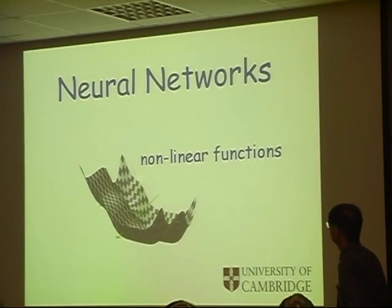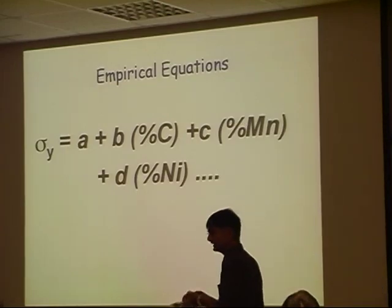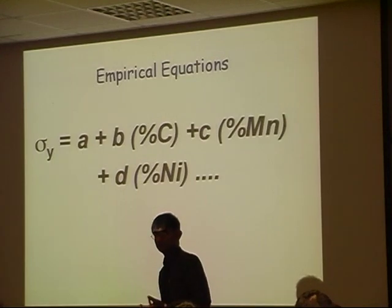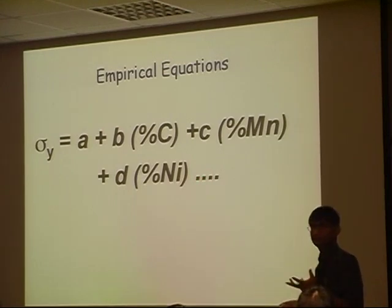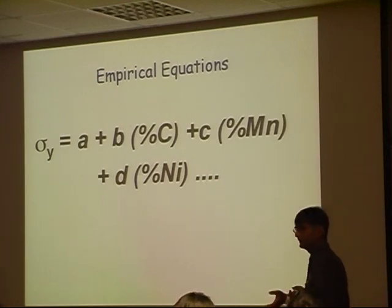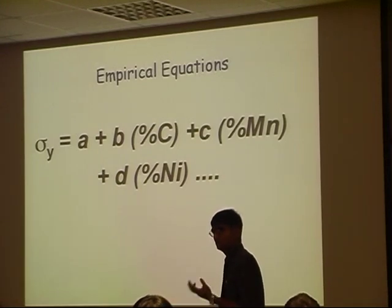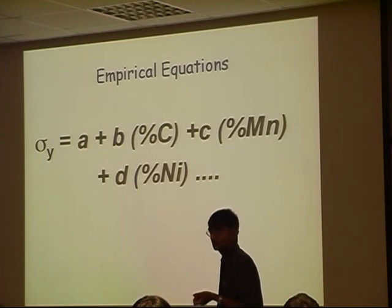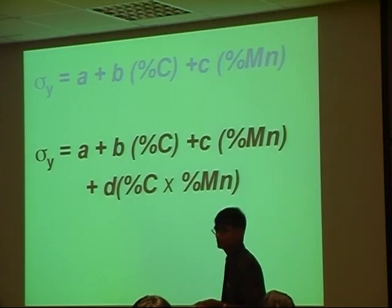Now, supposing that, and this brings me on to the subject of neural networks, supposing that you had a complicated problem and you didn't know how to predict it, then the first thing you would do is write an empirical equation like this, a linear regression equation. So here I'm writing the strength as a function of a constant, the carbon concentration, the manganese concentration, the nickel concentration, linear regression. But then you go and show this to your boss and he says, I know that there is an interaction between carbon and manganese, which is not in this equation.